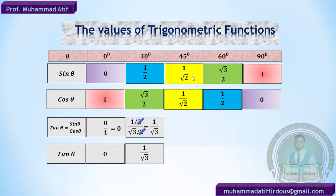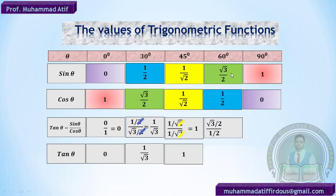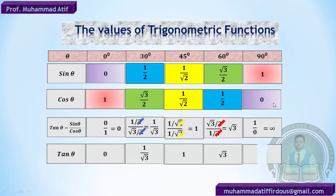For tan 45°, divide (1/√2) by (1/√2) = 1. For tan 60°, divide (√3/2) by (1/2), the 2s cancel, giving √3. And lastly, tan 90° = 1/0 = undefined, or you can say infinity.